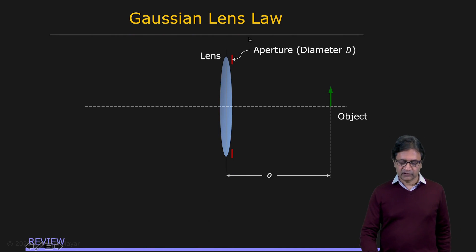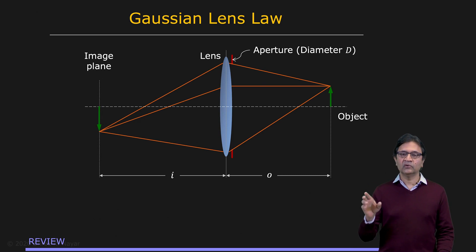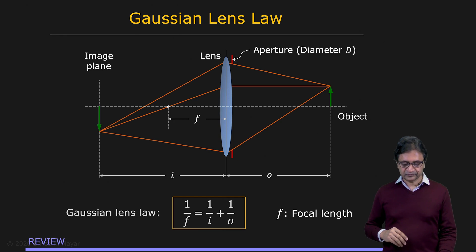We'll start with the Gaussian lens law. You have a lens with some aperture of diameter D, and let's assume that this is your object at a distance O from the lens. Light from this object is refracted or bent by the lens to be focused at a point behind the lens at a distance I from the lens — the image plane. O and I are related through the focal length: one over F equals one over I plus one over O.